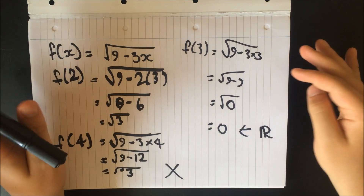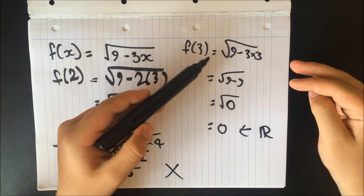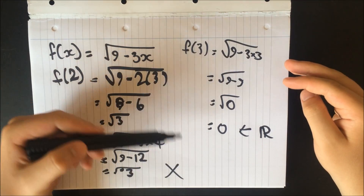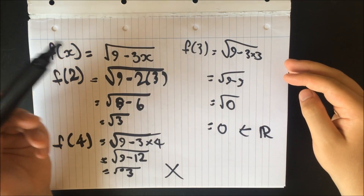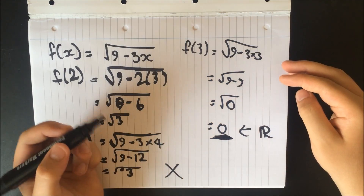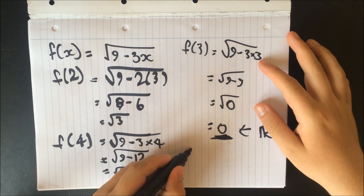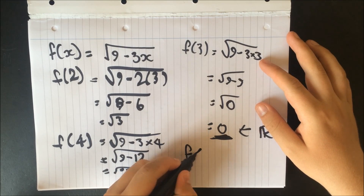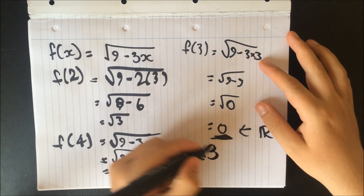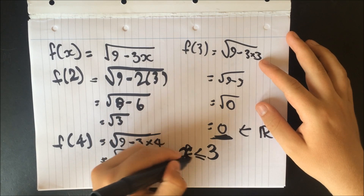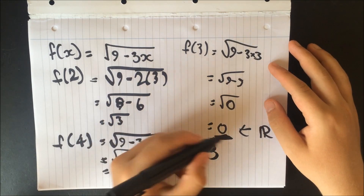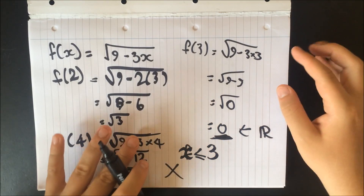So you can see in this case that if x was to be more than 3, then it wouldn't be a real value. Because 0 is the minimum we can take, we can say that x less than or equal to 3 would give us a real number. So this is our greatest possible domain.